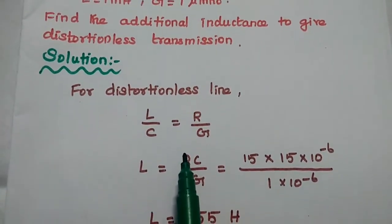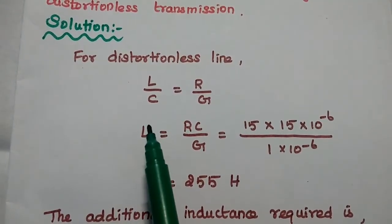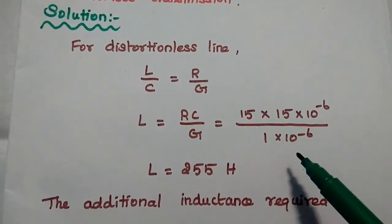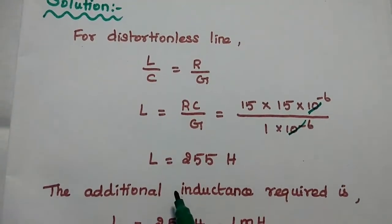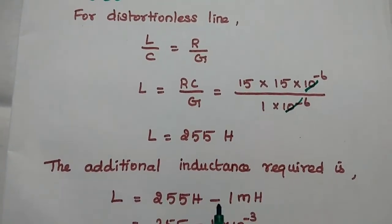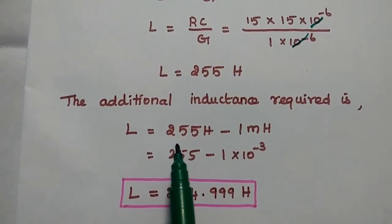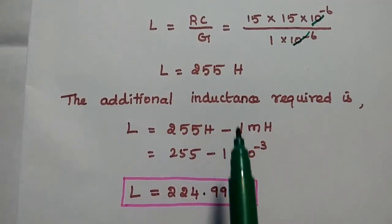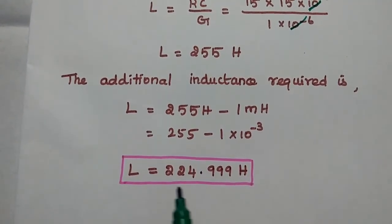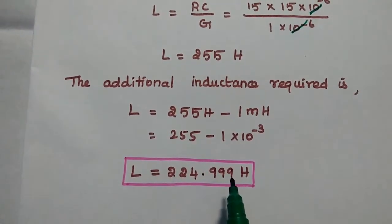In the solution, for a distortionless line the condition is L by C equal to R by G. We obtain the required L using the given parameters R, C, and G. Substituting those values, we get the inductance value as 255 millihenry for a distortionless line. But 1 millihenry is already given in the problem. So the additional inductance required is 255 minus 1, giving us 254 millihenry — approximately 224.999 millihenry as computed.